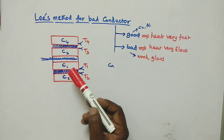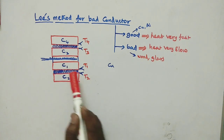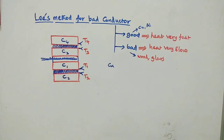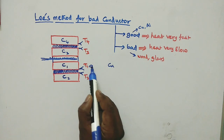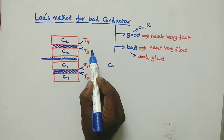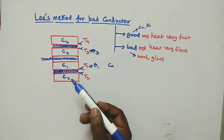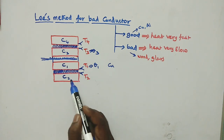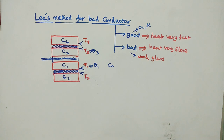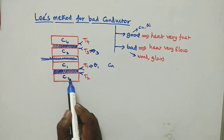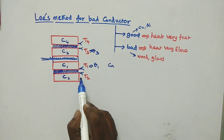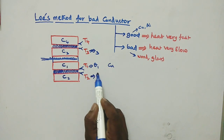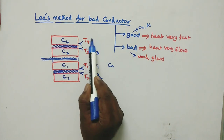The first discs to receive heat are C1 and C3. Thermocouple T1 measures temperature θ1 at disc C1. Between C1 and C2 is the bad conductor, so T2 measures temperature θ2 at disc C2. Similarly, T4 measures temperature θ4 at disc C4.